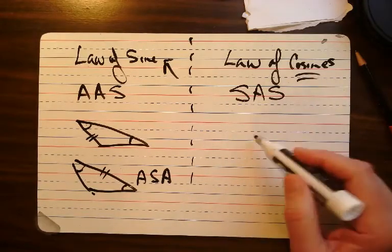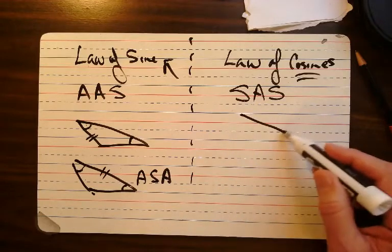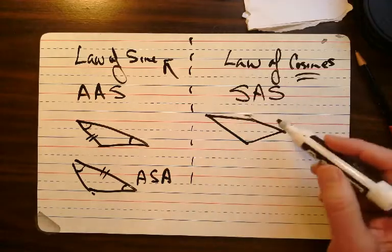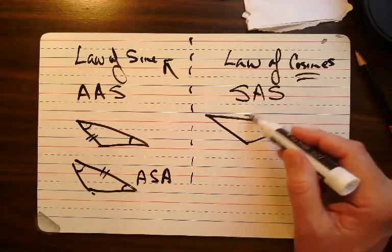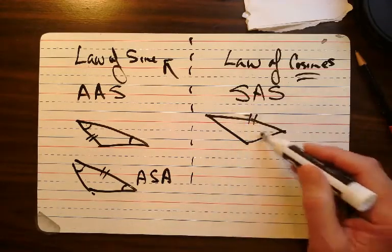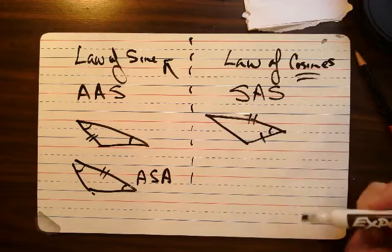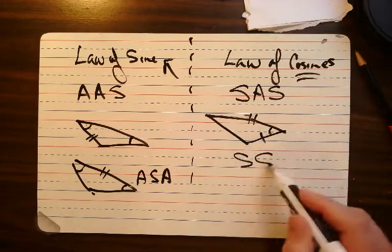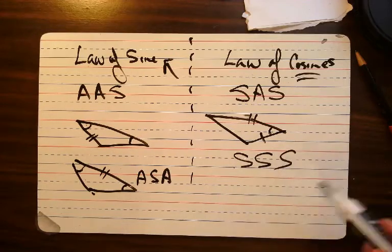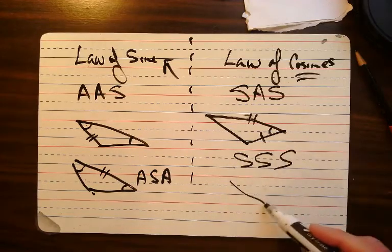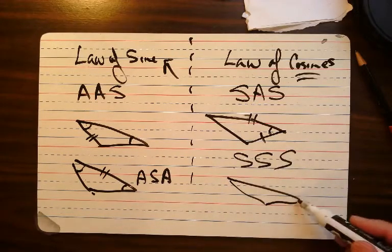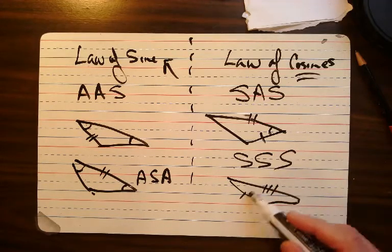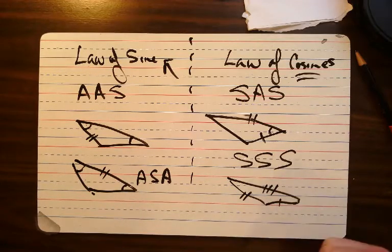So two sides and one angle — you could have something like this. Two sides: you know this side, and you know this side, and you know the angle in between. That would be the law of cosines. Or if you have three sides, you can also use the law of cosines. So if I know this side, and this side, and this side, I can use the law of cosines.